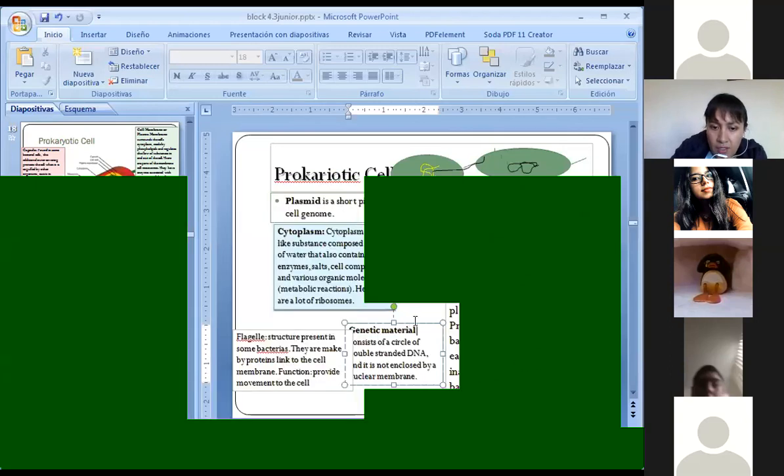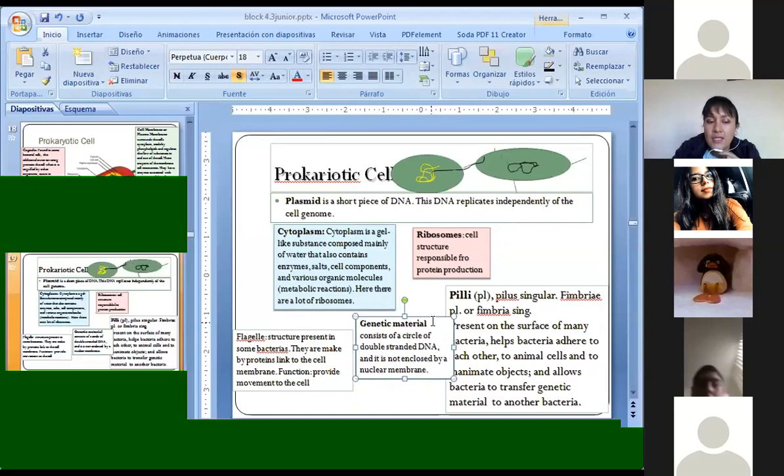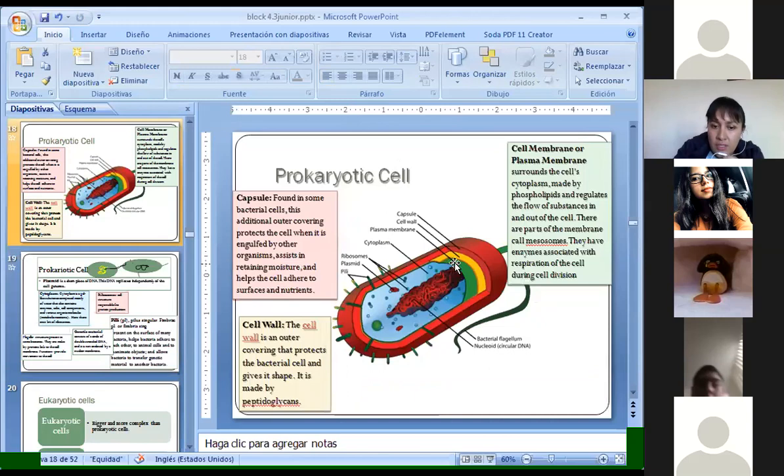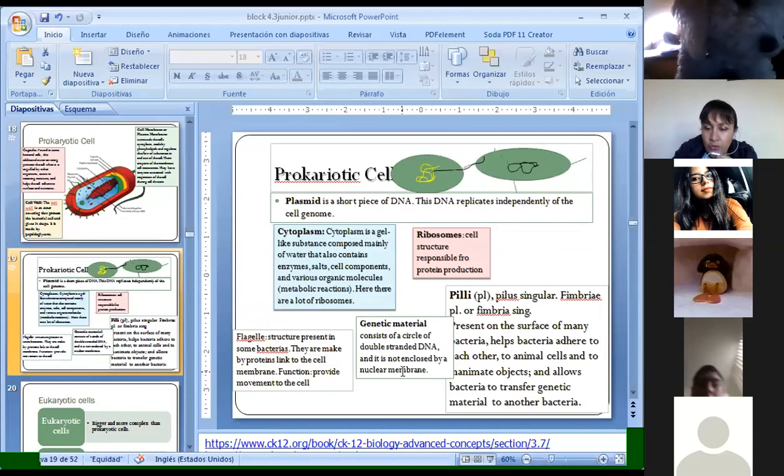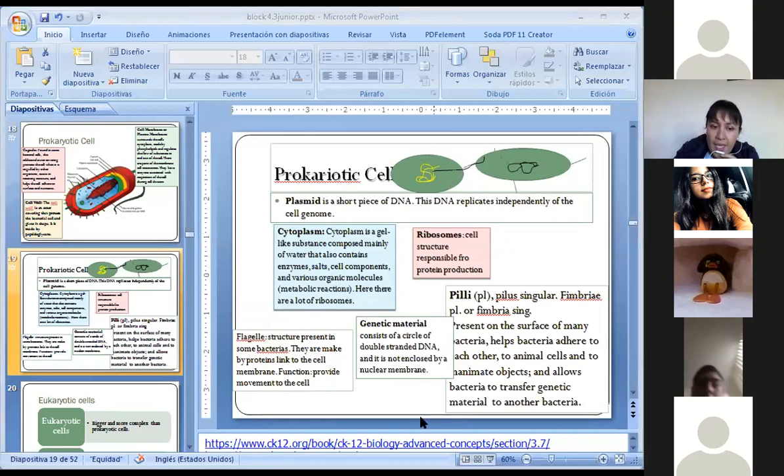Then we are going to have the genetic material. As we say, the genetic material is like a circle. If you see in this picture, it's like a circle, in a double helix of DNA. And it's not enclosed. So, it doesn't have a nuclear membrane. No tiene una membrana celular. Okay. And the flagella. What is the function of flagella? La función de los flagelos. Los flagelos. Moverse. Give movement to the cell. Movimiento. Provide movement. Yes. That will be the main function of the cell. Great.